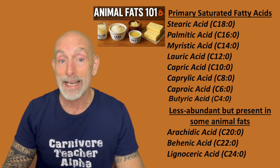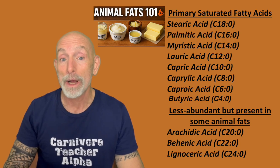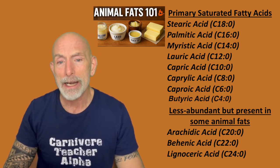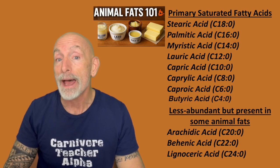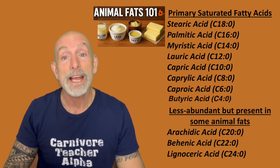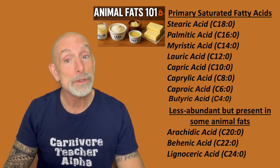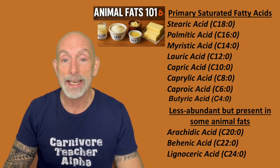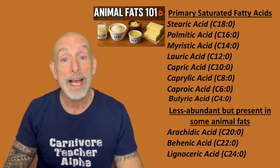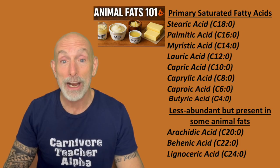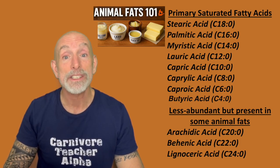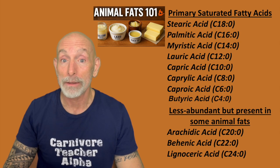Then there's lauric acid, C12, a medium-chain fat at the far end. It's found in dairy, animal milk, and some beef fat. It's antimicrobial and immune-supporting. Myristic acid is a long-chain fatty acid found in beef tallow, mutton, dairy, and pork. It supports testosterone and cell signaling.